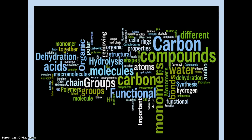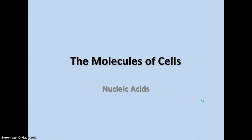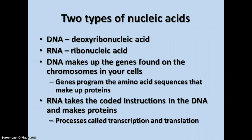This is the fifth and final set of notes on the carbon compounds unit, molecules of cells. This one is about nucleic acids. There are two main types of nucleic acids: DNA, or deoxyribonucleic acid, and RNA, ribonucleic acid.